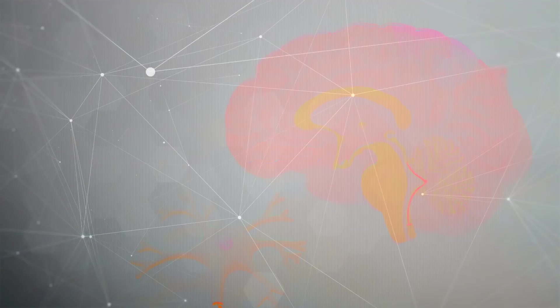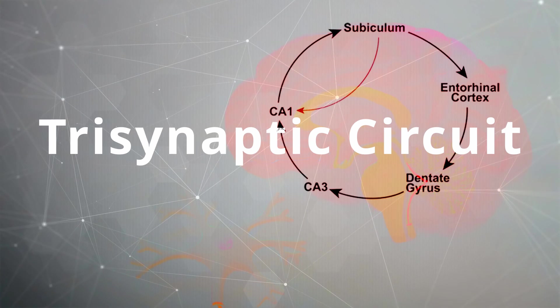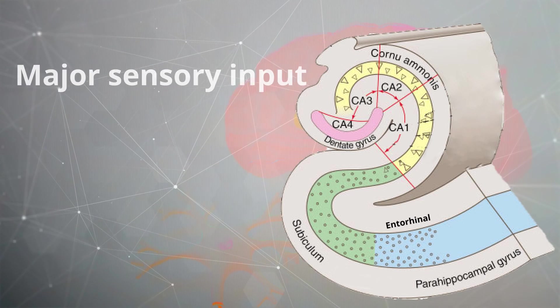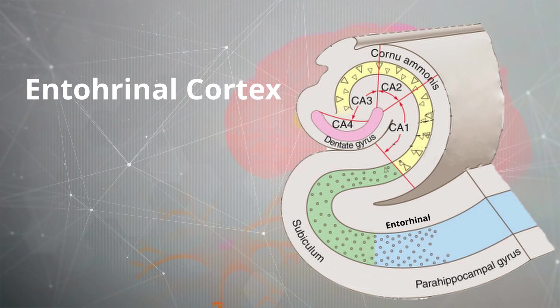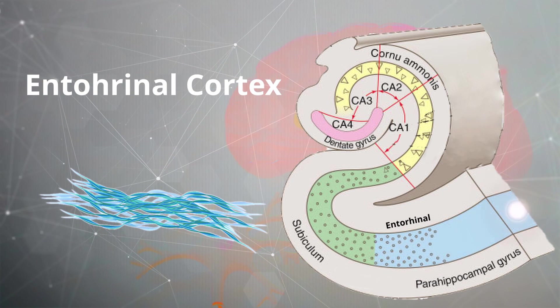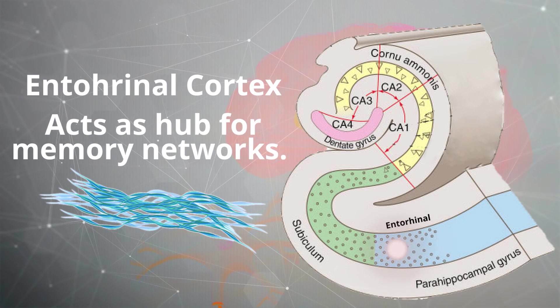Now, let's look further into the trisynaptic circuit, which will explain the flow of information through the structures of the hippocampus. The major sensory input into the hippocampal formation will come in from the entorhinal cortex. This is a bundle of fibers forming the input tract. This will act as a hub in the widespread network for the memory.